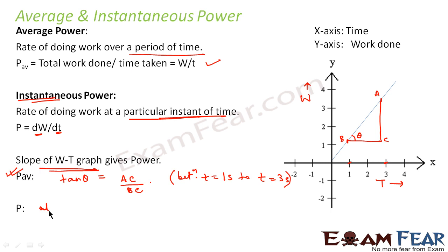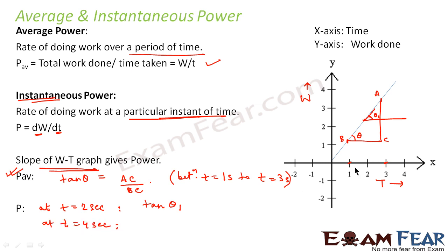Similarly, if asked what is the instantaneous power at t = 2 seconds, we look at that point on the graph and the value of the slope at that point is the instantaneous power — let us say this is theta 1, so instantaneous power at t = 2 seconds is tan theta 1. Similarly, instantaneous power at t = 4 seconds, let this angle be theta 2, so instantaneous power there is tan theta 2. When I talk of instantaneous power, I mean the value of power at a particular instant; when I say average power, I mean the value of power over an extended period of time.